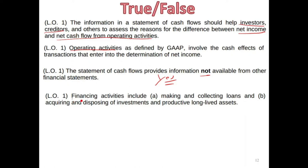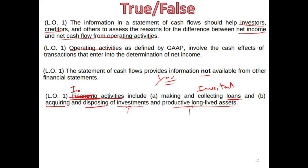Statement four: Financing activities include making and collecting loans and acquiring and disposing of investments and productive long-lived assets. This is false. When you make loans or acquire and dispose of investments — stocks, bonds, property, plant, and equipment — that's investing, not financing. Financing deals with your own stocks and bonds, long-term debt, and stockholders' equity.